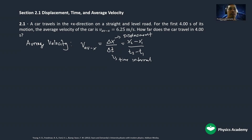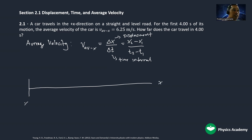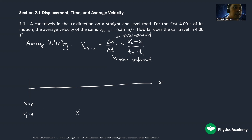In our Cartesian coordinate system, the positive x direction is to the right. Our initial position x₁ is at the origin, x₁ equals zero, at time t₁ equals 0.0 seconds. After four seconds, the car is at position x₂, which we do not know, at time t₂ equals 4.0 seconds. x₂ is the final position we need to find.